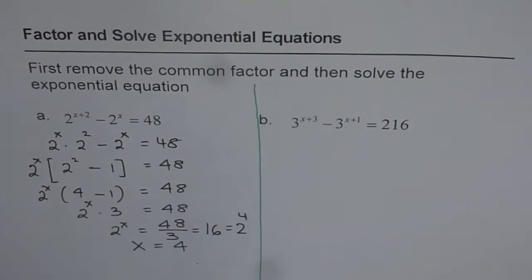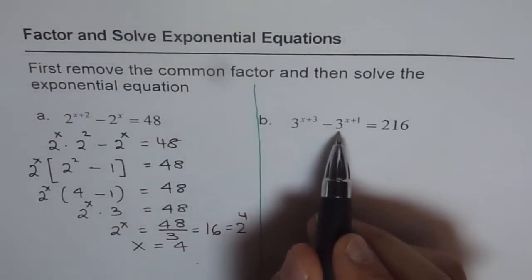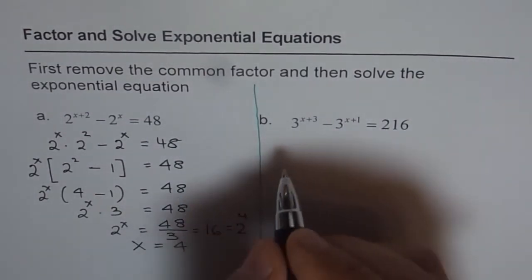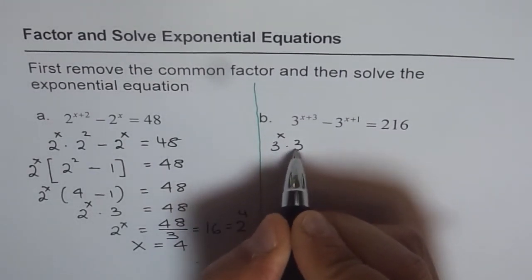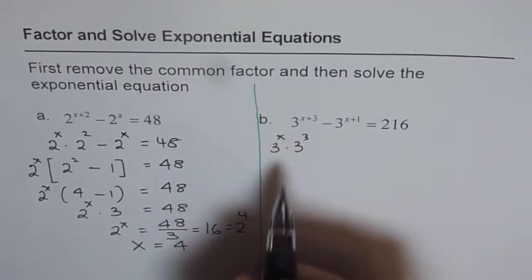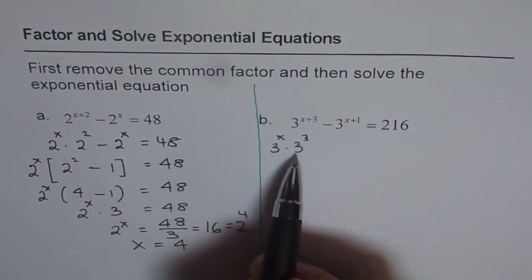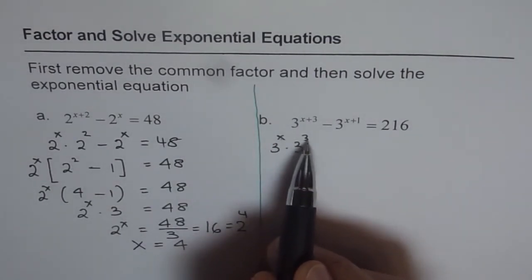Which is very similar. So we have 3 to the power of x plus 3 minus 3 to the power of x plus 1 equals to 216. 3 to the power of x plus 3 can be written as 3 to the power of x times 3 to the power of 3, right? If you multiply them, they have the same base. Exponents get added, x plus 3.